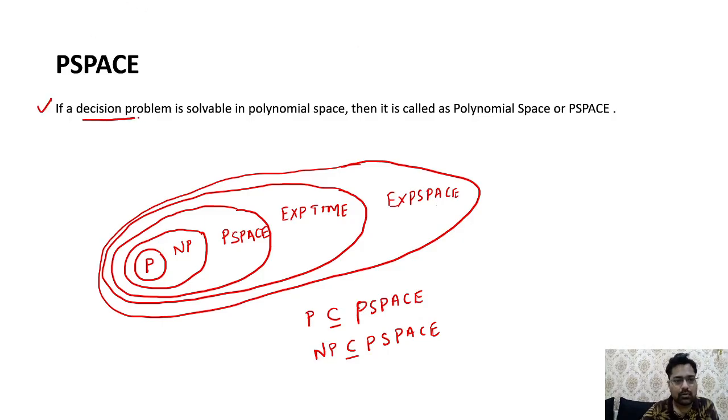As per the definition, it is written a decision problem is solvable in polynomial space. What I told you earlier. So it is called as polynomial space or PSPACE.